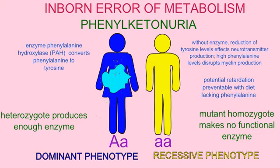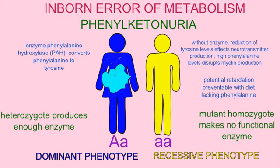converts the amino acid phenylalanine into the amino acid tyrosine. An individual who is heterozygous for a mutation in this enzyme still possesses enough enzyme to produce sufficient levels of tyrosine and prevent the buildup of phenylalanine.